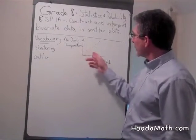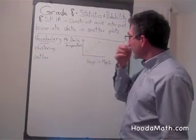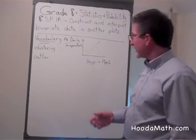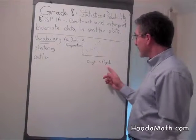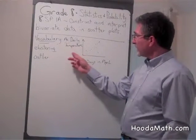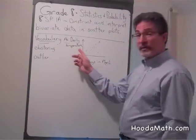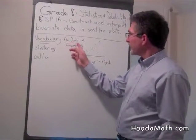A scatter plot is when you have a variety of dots with bivariant data. Our independent data, in this case, is the days in March, and our dependent variable is the average daily temperature.